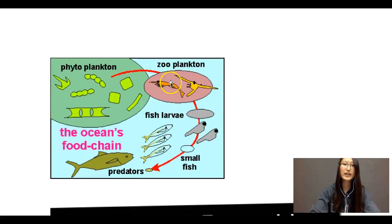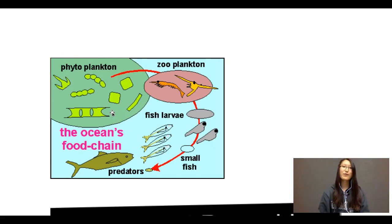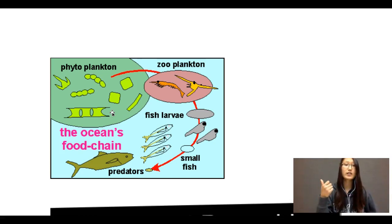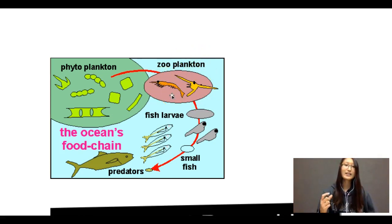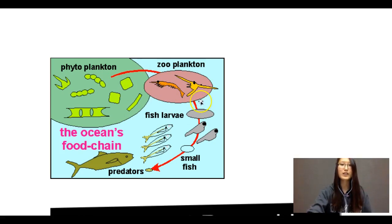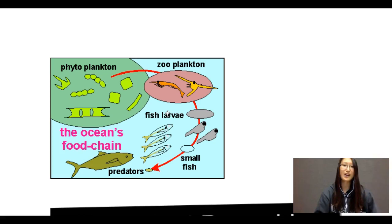Phytoplanktons are photosynthetic marine organisms — they're kind of the plants of the ocean, even though they're not actually plants. So they're autotrophs and producers. Zooplanktons are tiny fish or shrimps that eat the phytoplanktons, so these are the primary consumers in the ocean food chain. They're kind of like the herbivores of the ocean. When a whale filters through the ocean, they eat a lot of these zooplanktons.